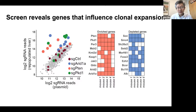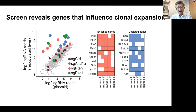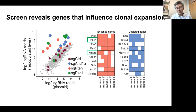The screen worked quite well. Control guides fell along the line indicating no enrichment, but there were outliers: ARID1A, PTEN, and PKD1. PTEN is a comforting positive control. ARID1A had been studied using classic mouse models showing that deleting it promotes regeneration — so it made sense it was enriched. A surprise was PKD1. We decided to focus on PKD1 and KMT2D, which are not as well understood in the context of regeneration or cancer.